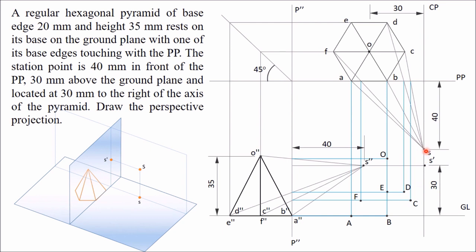Now these are the visual rays — you are standing here as the observer's eye, looking at the object. When you look from this side, A, B, and C are visible, but D, E, and F are not visible. So I join visible edges with thick lines: A to B, B to C, and then join these with O, as all these are visible sides. The other sides — F, E, B — are not visible and are joined with dash lines. This is the required perspective view of the given hexagonal pyramid. In this way you can draw the perspective view using the top view and side view of the object. Thank you for watching this video.